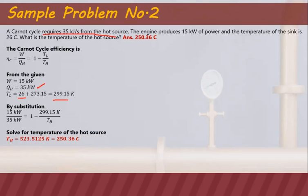For this subject, use four decimal places for intermediate results and two decimal places for the final output. Converting 523.5125 Kelvin to degrees Celsius by subtracting 273.15 gives 250.36 degrees Celsius. So the temperature of the hot source is 250.36 degrees Celsius.